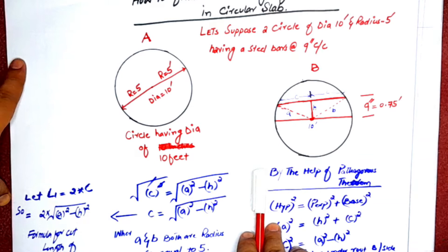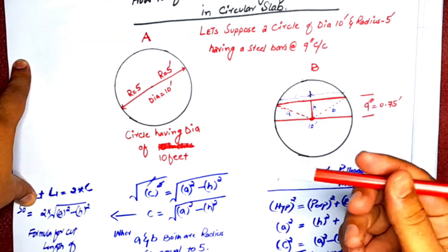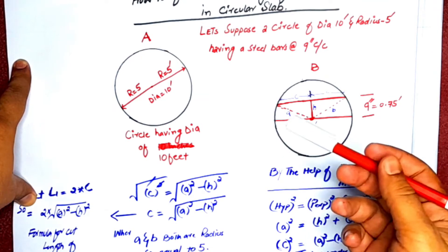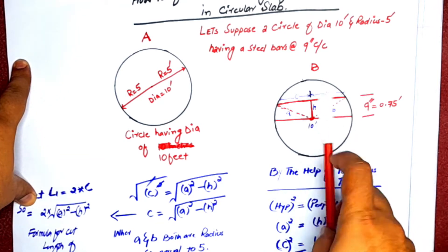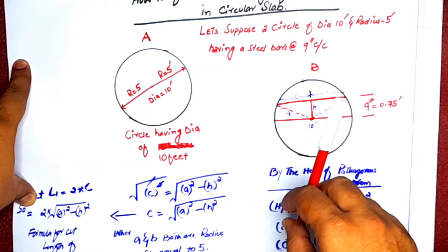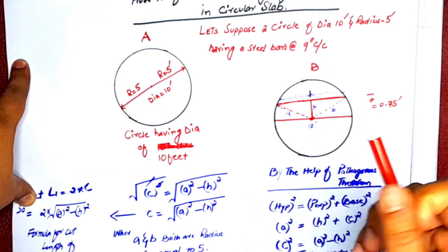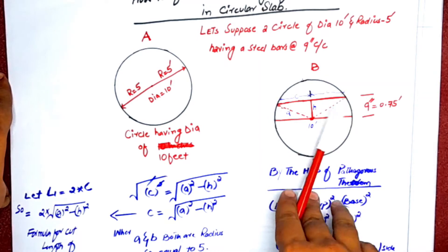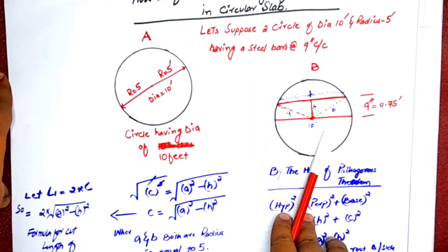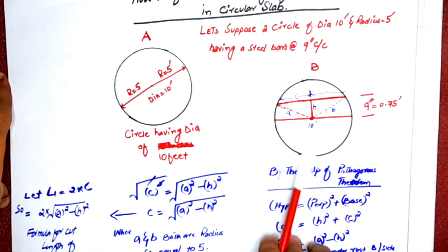Today I will show how to calculate the cut length of steel bars used in a circular slab — that is, how we can find the length of a bar which is called cut length in a circular slab.